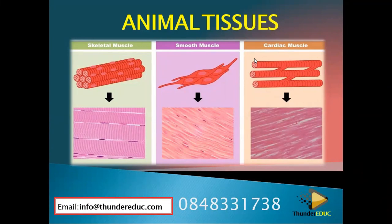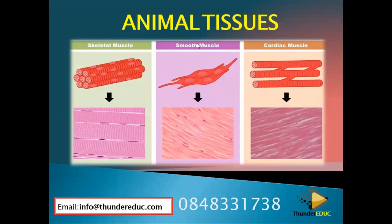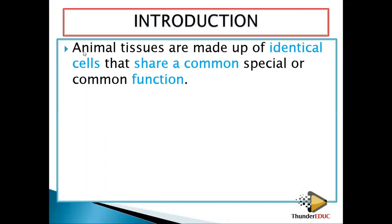When you say animal tissues, these are cells combined together that perform a specific or common function. Since we have plants and animals, we are going to look at plant tissues and animal tissues separately. In this clip, we will be looking at animal tissues — cells which share a common function.